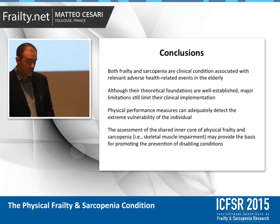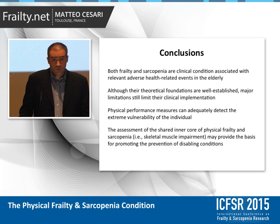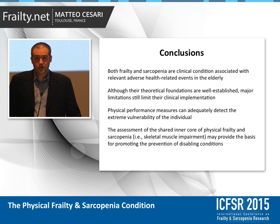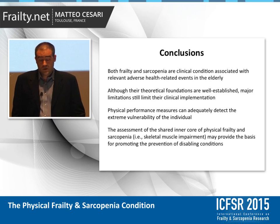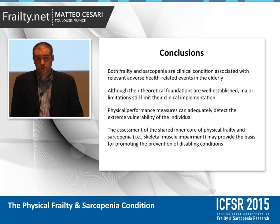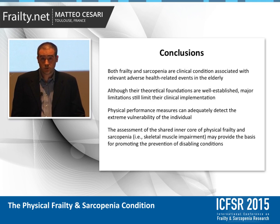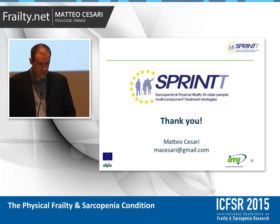In conclusion, both frailty and sarcopenia are clinical conditions that expose older persons to risk of negative health-related events. So it is important to develop interventions targeting them. But for doing this, we need to accomplish some regulatory tasks, among which is the definition of a valid, replicable, and standardized operationalization of the condition. We hope that in SPRINT, the framework shown here will be translated into a successful trial. Thank you.